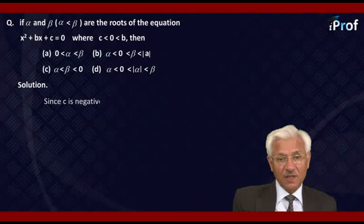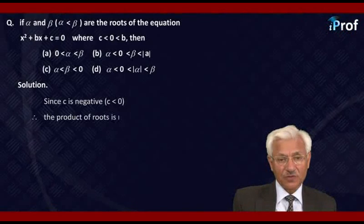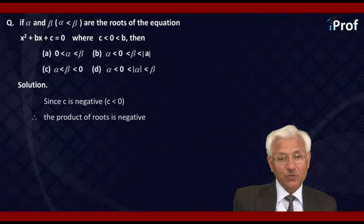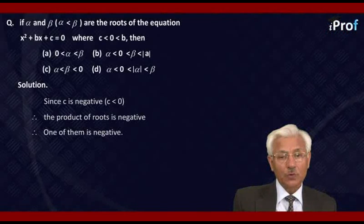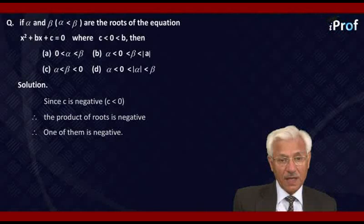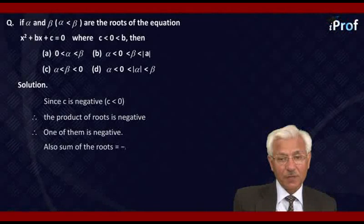Since c is negative, that means the product of the roots is negative. Therefore the roots are of opposite signs — one is negative and the other is positive. Hence the sum of the roots is also −b. But b is positive, so −b is negative.